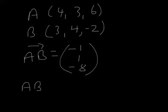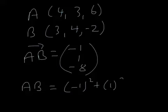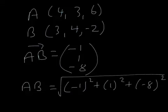The magnitude of vector AB — written without the arrow, just |AB| — means the length of the vector. We find it using Pythagoras in three dimensions, which works out to be the square root of 66.